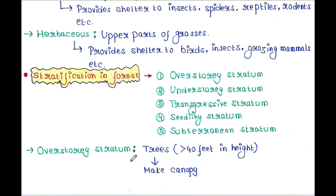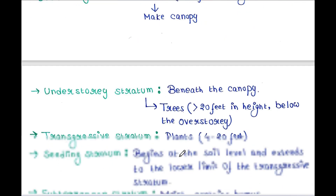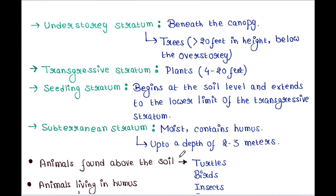The overstory stratum contains trees with a height of more than 40 feet, and they form the canopy. Next is the understory stratum. These trees are found beneath the canopy and have a height of more than 20 feet but below the overstory.